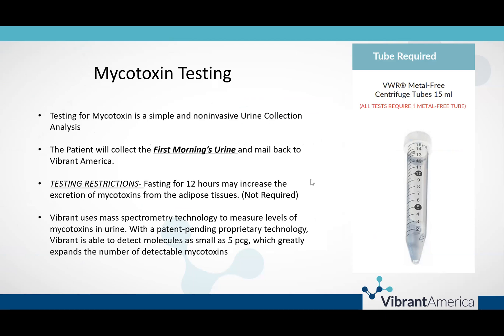Testing for mycotoxins is a simple and non-invasive urine collection analysis. The patient will collect the first morning's urine and mail it back to Vibrant. Regarding testing restrictions, fasting for 12 hours may increase the excretion of mycotoxins from the adipose tissue, but this is not required. Vibrant uses mass spectrometry technology to measure levels of mycotoxins in urine. With a patent-pending proprietary technology, Vibrant is able to detect molecules as small as 5 picograms, which greatly expands the number of detectable mycotoxins.